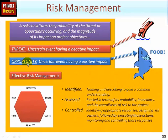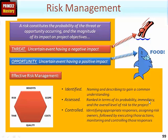Risks could impact any one or more of the six variables of any project. For risk management to be effective, risks need to be identified, assessed, and controlled. Identifying means naming and describing each risk so that everyone has a common understanding. Assessment covers probability, immediacy — referred to as proximity, meaning when from the present time the risk might occur — and the overall aggregated risk level to the project.